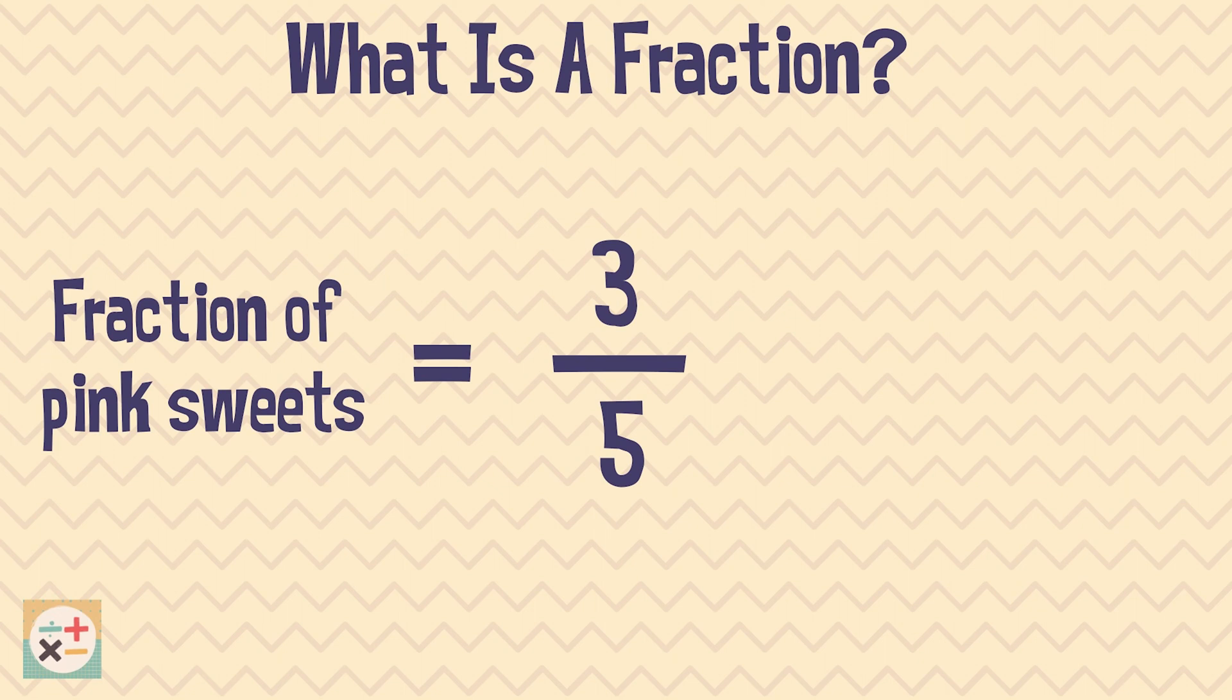The number on top of the fraction is called the numerator and represents the number of parts or objects we are referring to. In this example, the number of pink sweets.